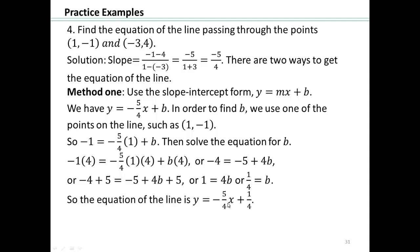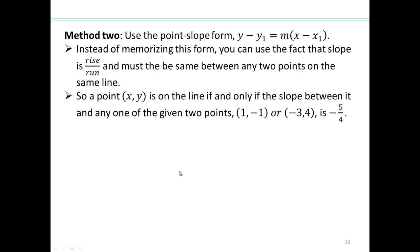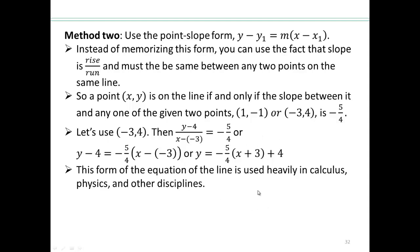The second method: again find the slope rise over run, which is negative 5 quarters. We know slope means that for any point (x, y) on the line, the slope is negative 5 quarters. So y minus 4 over x minus negative 3 equals negative 5 quarters, or y minus 4 equals slope times x minus x₁. This gives the equation in point-slope form — the form used heavily in calculus, physics, and other disciplines.